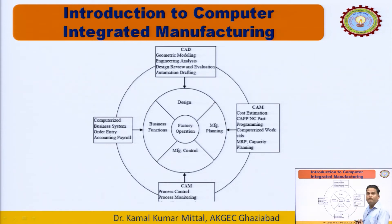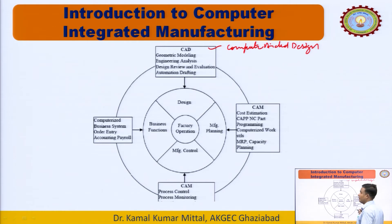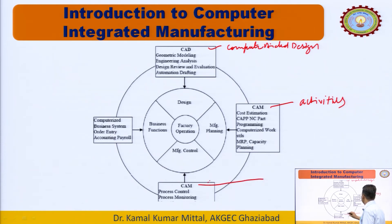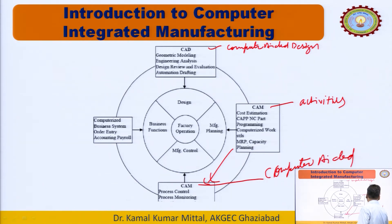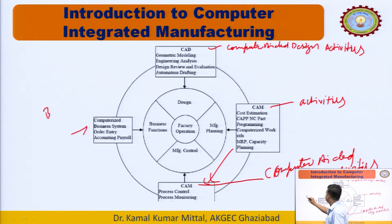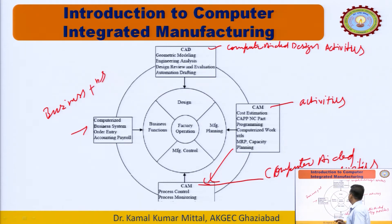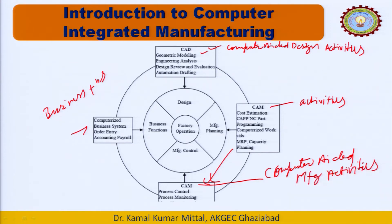This is the complete block diagram of Computer Integrated Manufacturing. First is CAD — computer-aided design activities — then CAM — computer-aided manufacturing activities. Under CAD, geometric modeling is the first component. Geometric modeling means creating a part, which may be a 2D or 3D drawing.